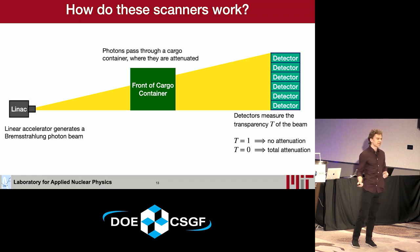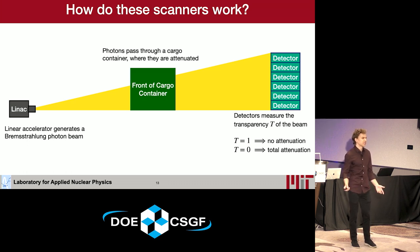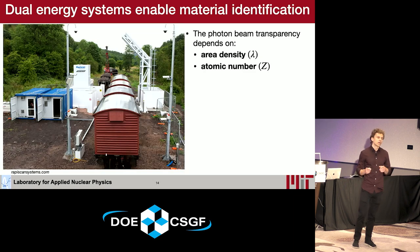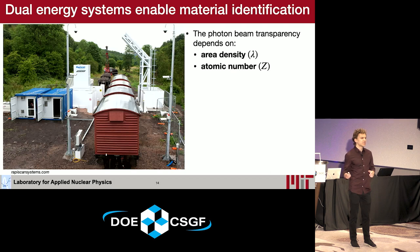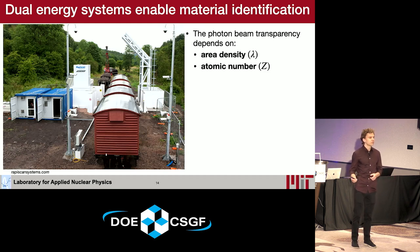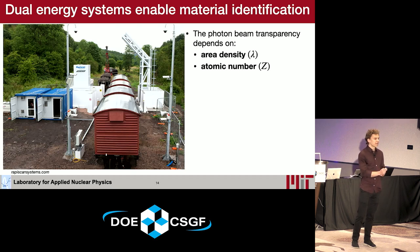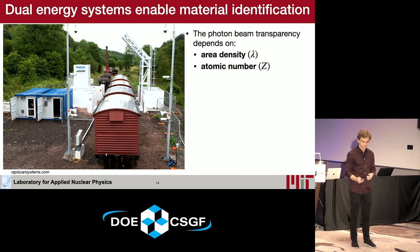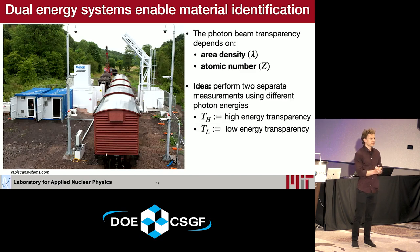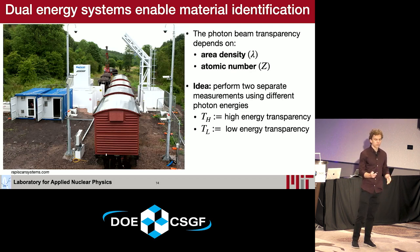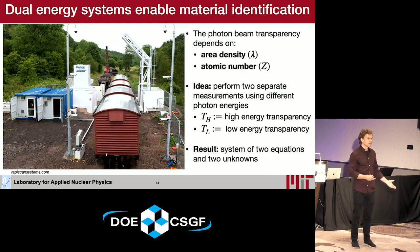The photon beam transparency depends on two things: the area density of the content and the atomic number of the material, since different elements attenuate the photon beam differently. With two unknowns, if we make two measurements using different photon energy spectra — a high energy and a low energy measurement — we have two measurements for two unknowns. In principle, we could solve that system and infer the atomic number, which would be very useful for identifying illicit materials hidden inside cargo.